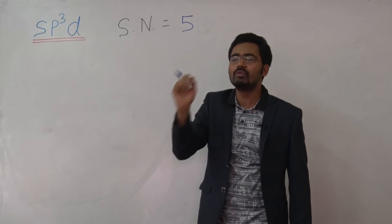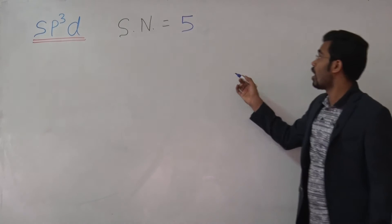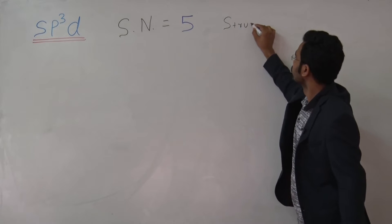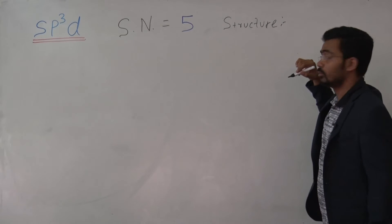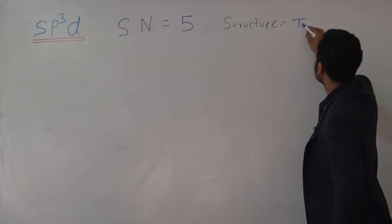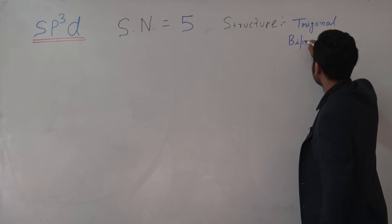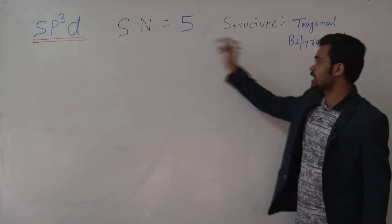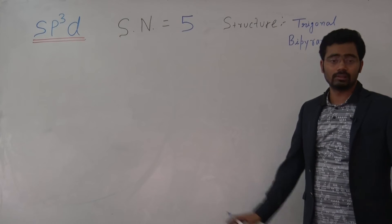When you mix, there is no individual effect of d, p, and s — all are the combined effects. The structure is trigonal bipyramidal. SP3D with steric number 5 gives a trigonal bipyramidal structure. We will consider all situations: all sigma bonds, some pi bonds, some lone pairs.